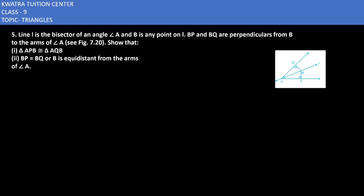Let's start with question number 5. Line L is the bisector of angle A, and B is any point on L. BP and BQ are perpendicular from B to the arms of angle A. Show that triangle APB is congruent to triangle AQB. So we have two triangles.